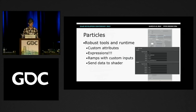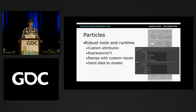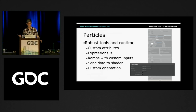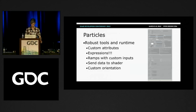We can also send these custom attributes to the shader, which allows you to further control the way the effect looks by controlling shader attributes. And then another cool feature is custom orientation — our sprites don't necessarily have to face the camera or be velocity aligned. We can use our custom attributes to define vectors that will orient the particles any way we want. Super flexible, really nice.